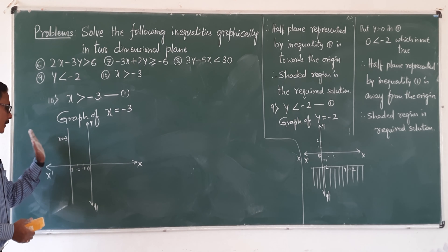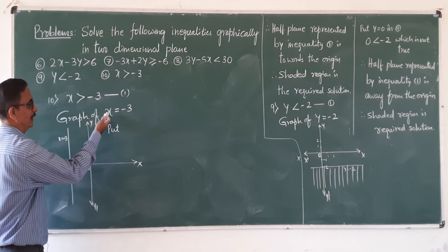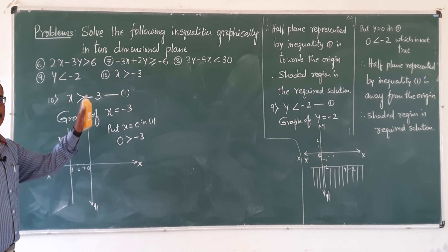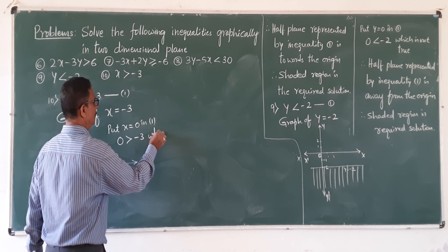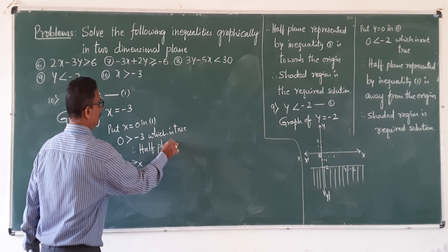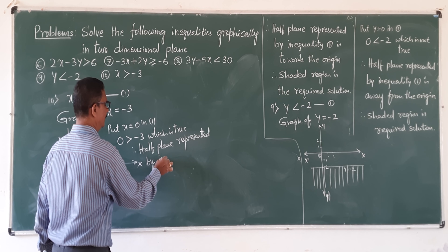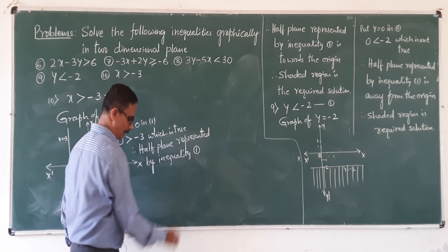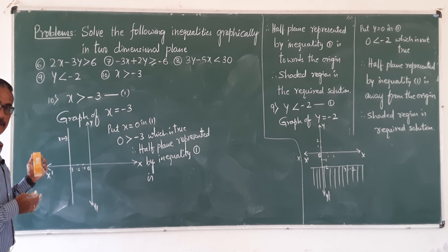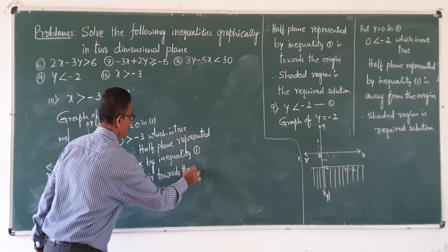We got two parts — which side to shade? Put x equal to 0 in the given inequality: 0 greater than minus 3. Is 0 greater than minus 3? Yes, which is true. Therefore, the half plane represented by the given inequality is towards the origin.